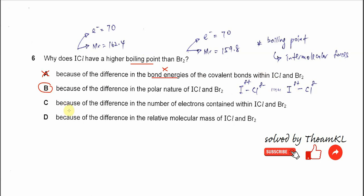Why C cannot? Because of the difference in the number of electrons within iodine chloride and bromine. The number of electrons, if you check, is actually the same at 70. So it's not really the main factor.